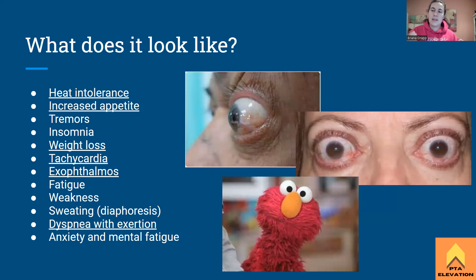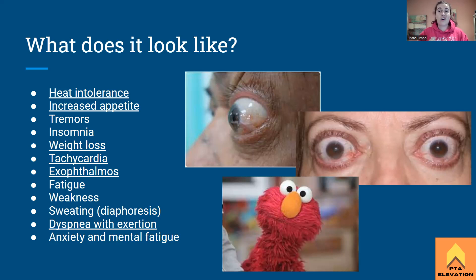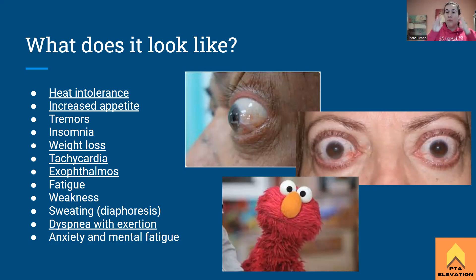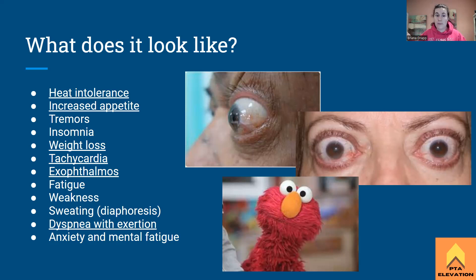Here are the signs the boards will ask you about. Heat intolerance — because all this overstimulation of the thyroid creates too much T4, raising metabolic rate and generating so much heat that the patient is already hot. Increased appetite because their metabolic rate is too fast, yet they're still losing weight. They'll have tremors because everything is over-activated. Insomnia, because the brain is doing too much. Weight loss, because they're burning too many calories above their normal basal metabolic rate. Tachycardia and heart palpitations.